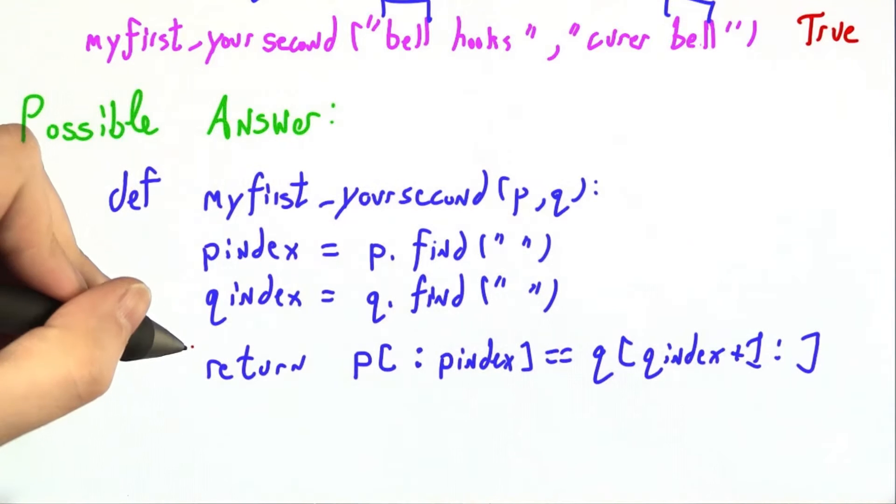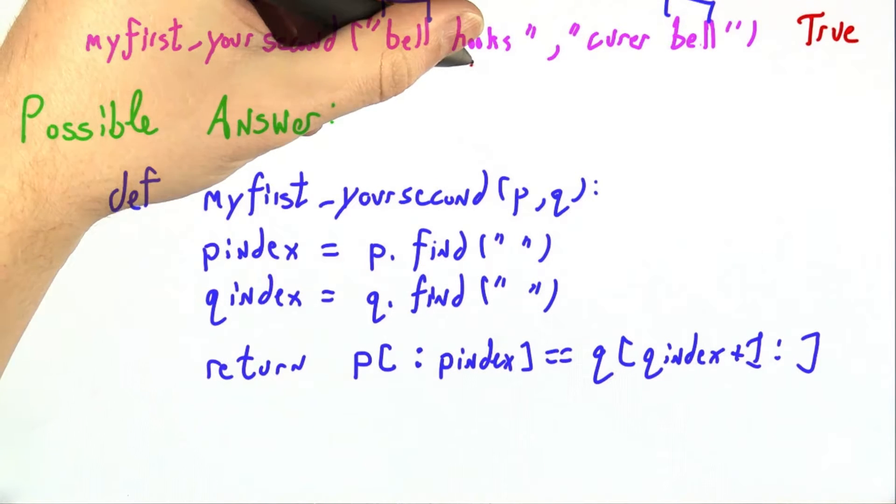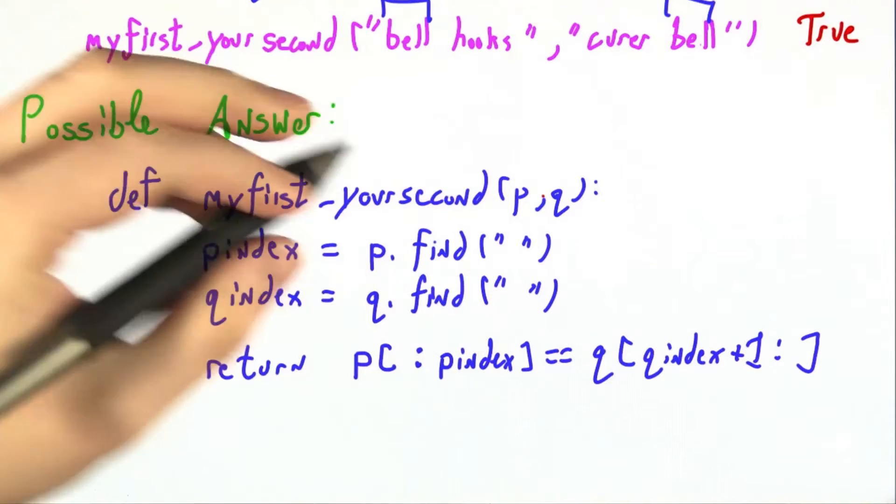Let's go through a possible answer together. Here I've written out a candidate example. Let's imagine that bell hooks is p and currer bell is q.